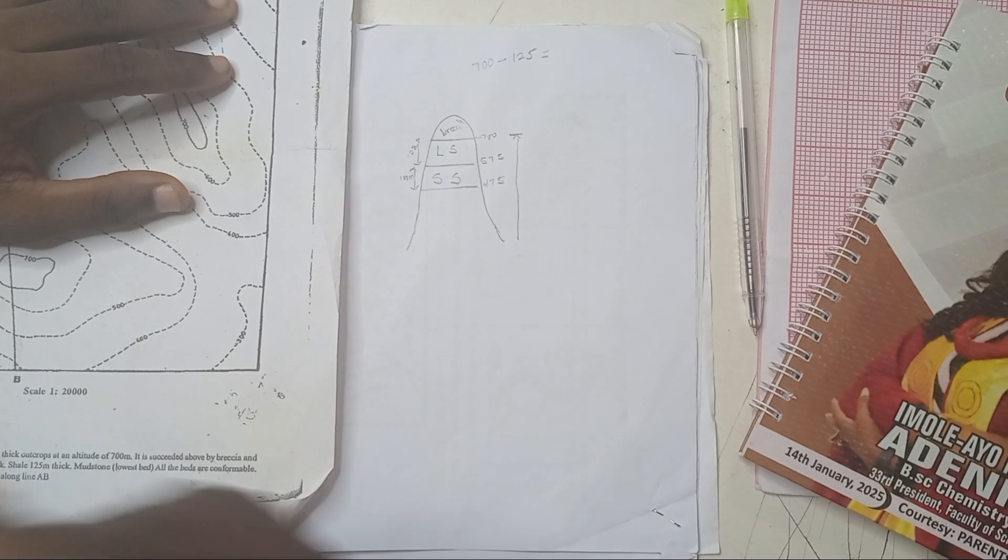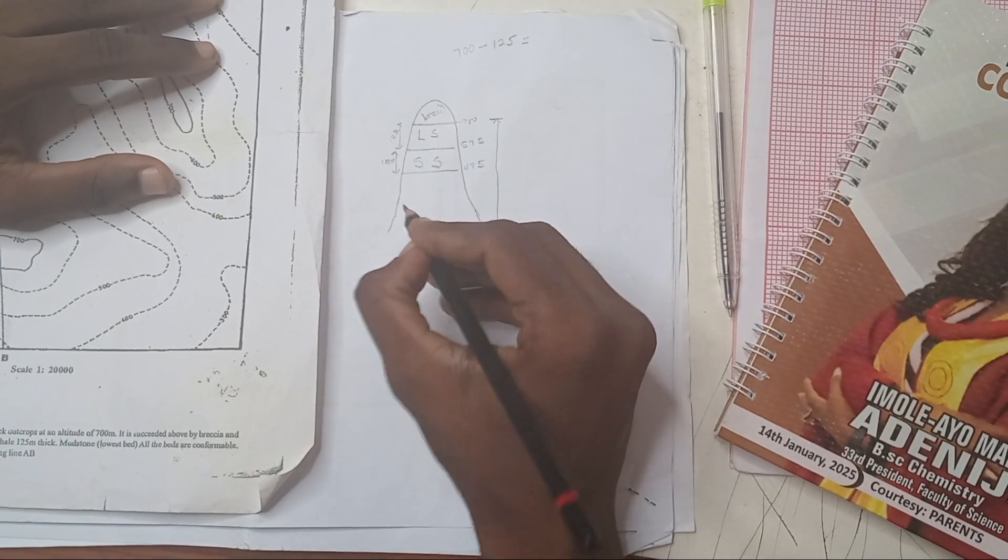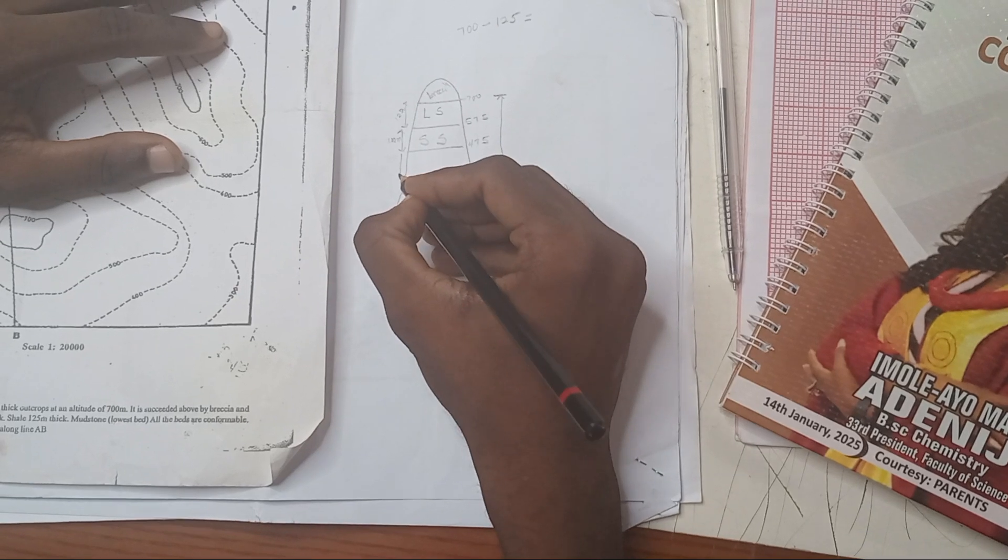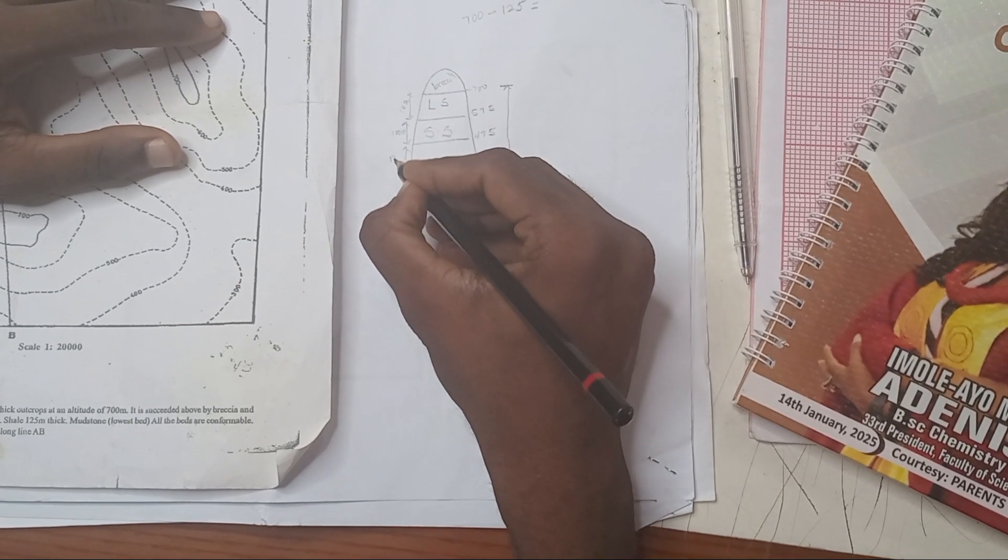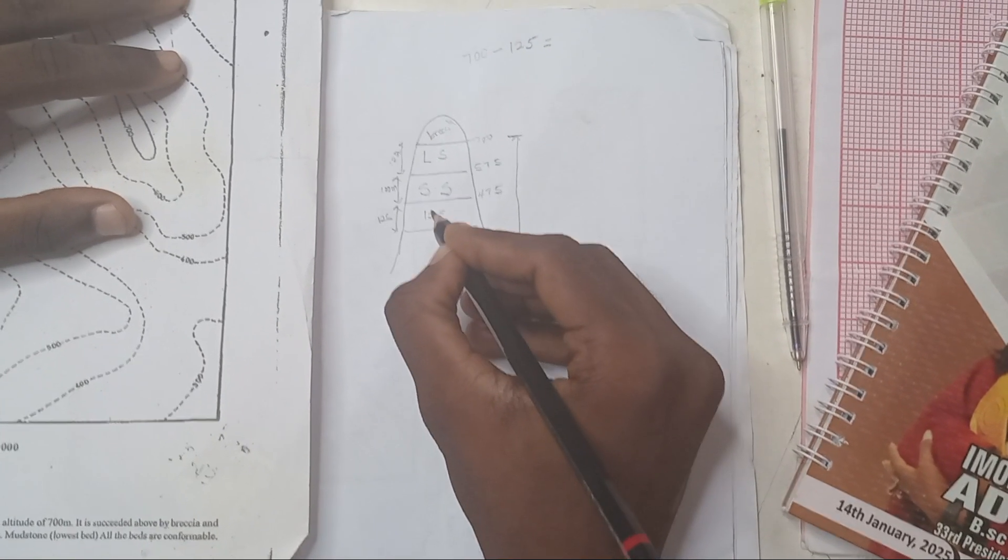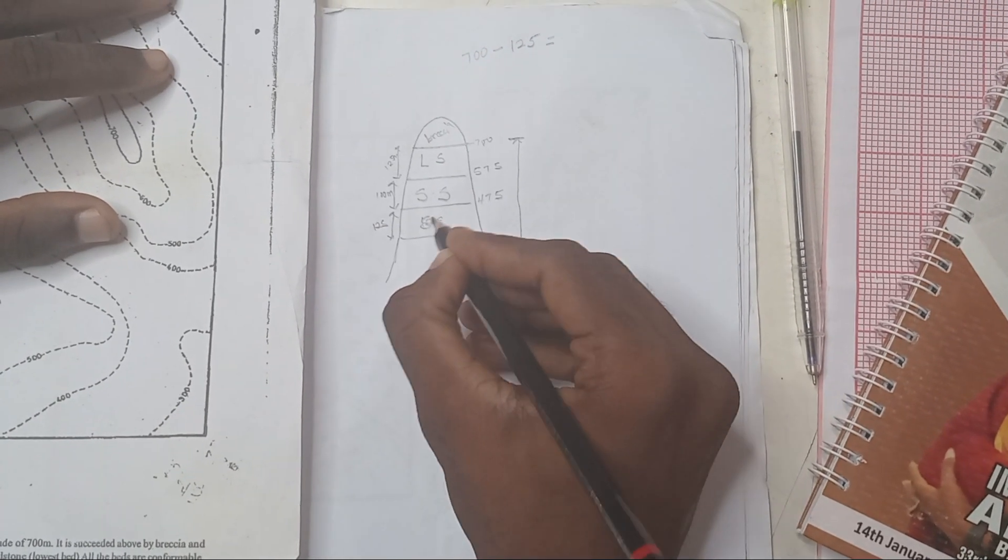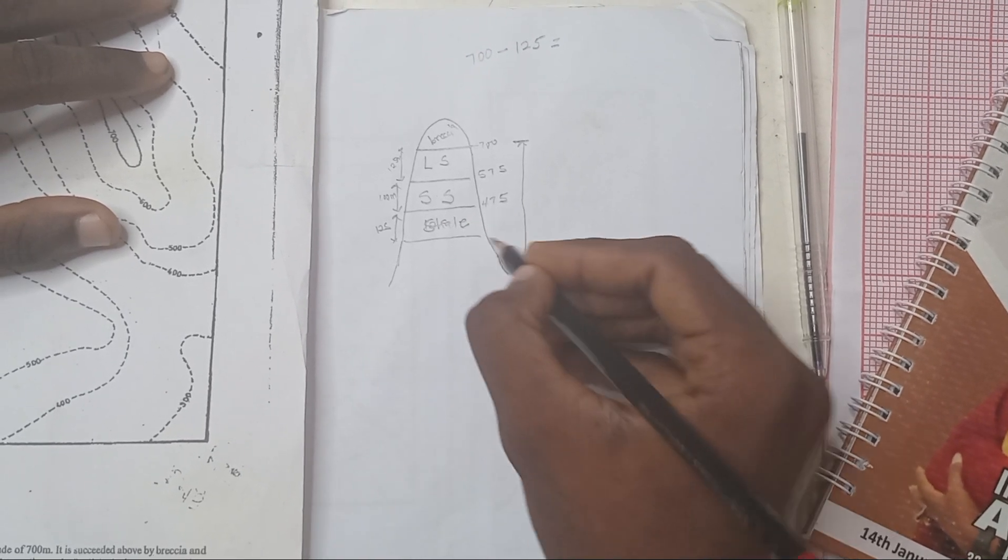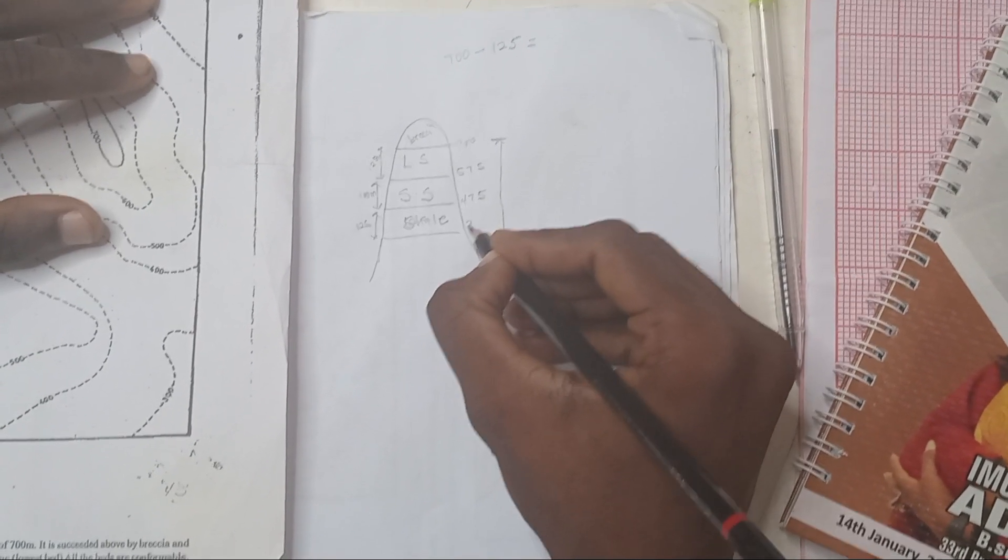Now they say sandstone is 100 meter thick. So at 100 meter, that's 575 to 475. So at this elevation, that is where you can find sandstone. Then after that, we have shale, which is 125 meter thick. So here I say shale is like this. Now they are telling me about how it succeeded below it. 125. We have shale, 125 meter thick, and it's 475 to 350.